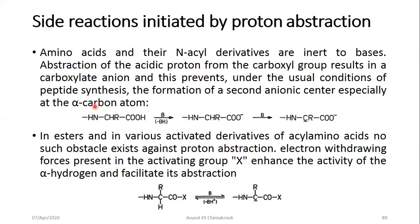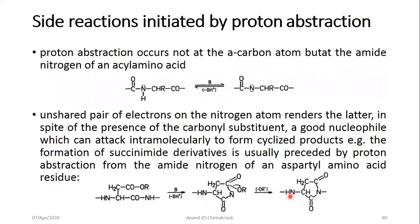Generally when adding a base to an amino acid, the carboxylate ion is formed. However, esters and activated groups of the acyl functional group facilitate the abstraction of the alpha hydrogen because the negative charge developed after abstraction is stabilized by the electron-withdrawing nature of these groups. Proton abstraction not only occurs at the alpha carbon but also at the amide nitrogen of acyl amino acids — this particular hydrogen is also acidic.